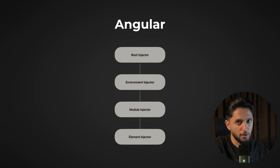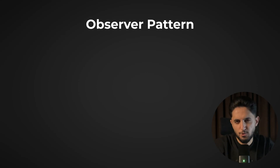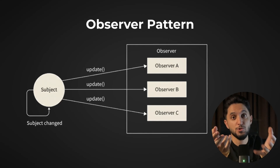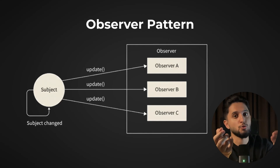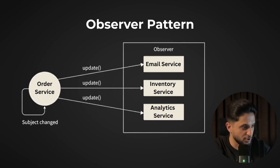The second pattern is responsible for keeping different parts of your system in sync without tight coupling, and it's called the observer pattern. At its core, the observer pattern has a one-to-many relationship: when the state of one object changes, all subscribers to that object get notified. For example, we have an order service, and when the order is processed it should notify the email service, inventory service, and analytics service.